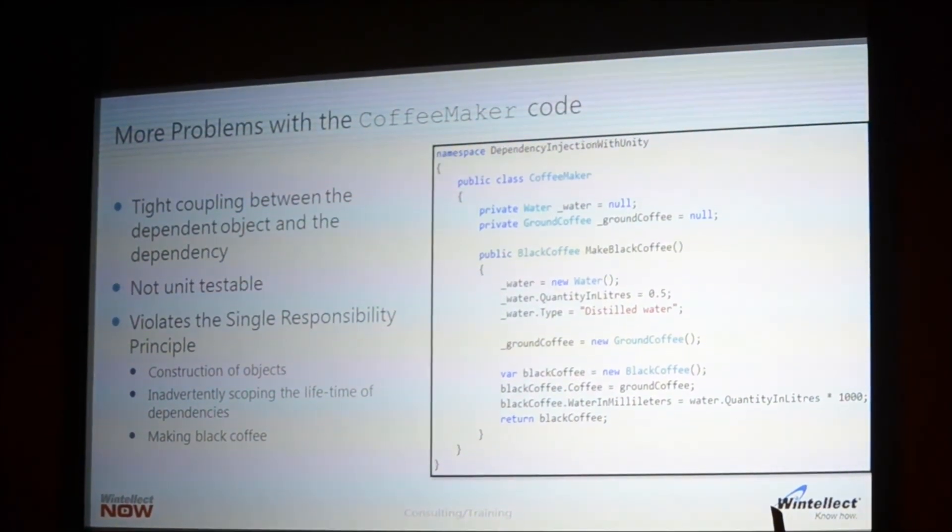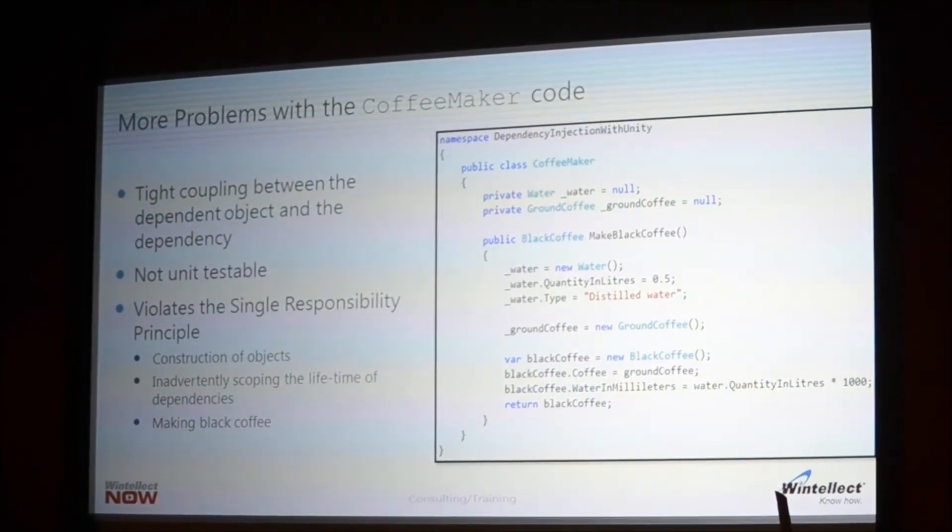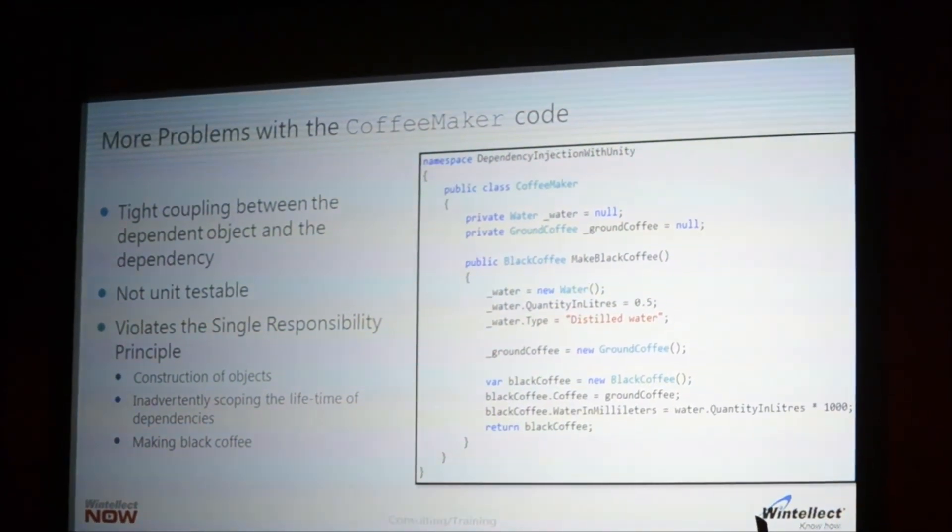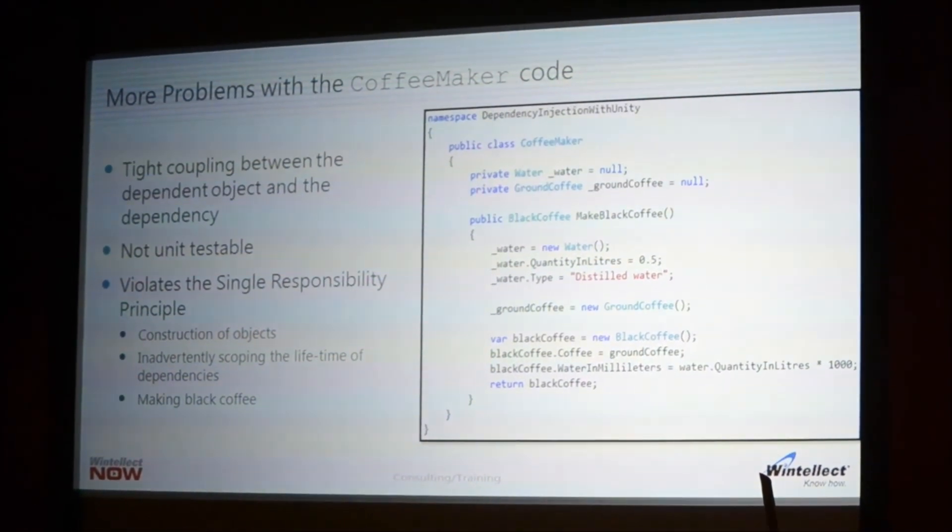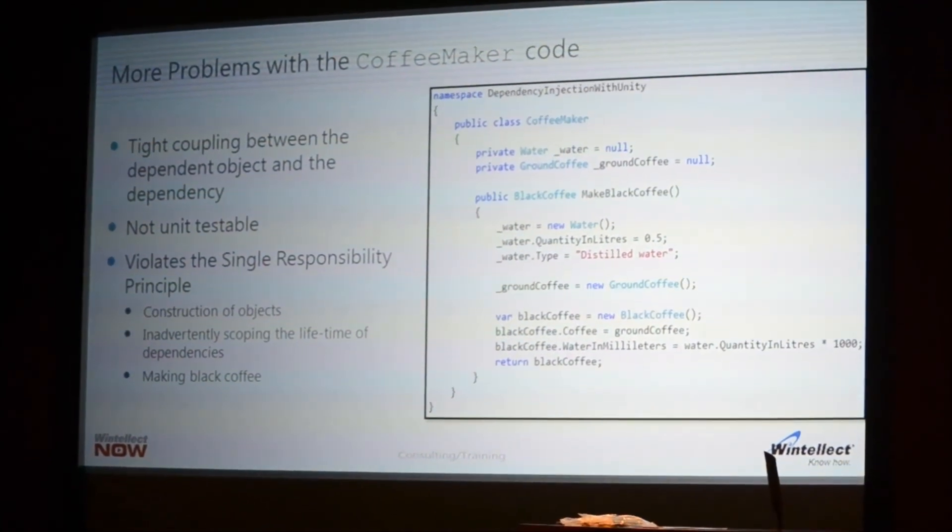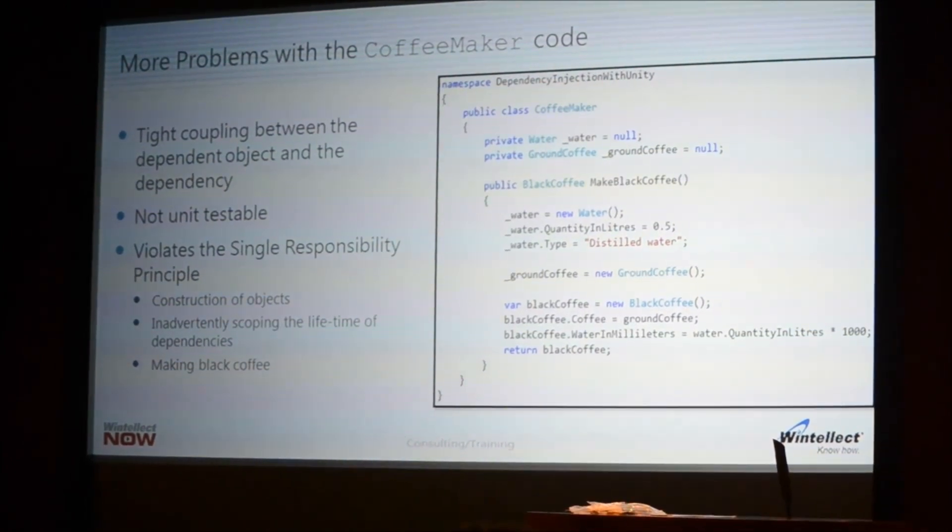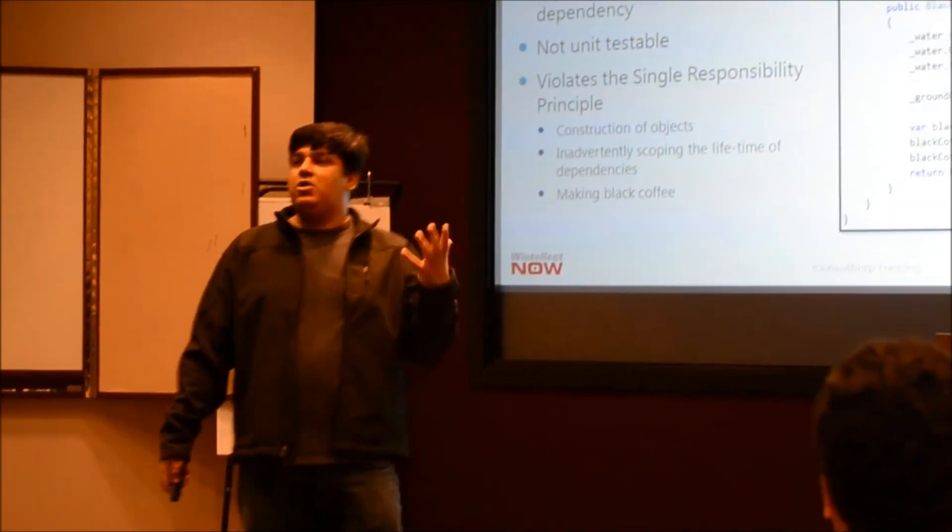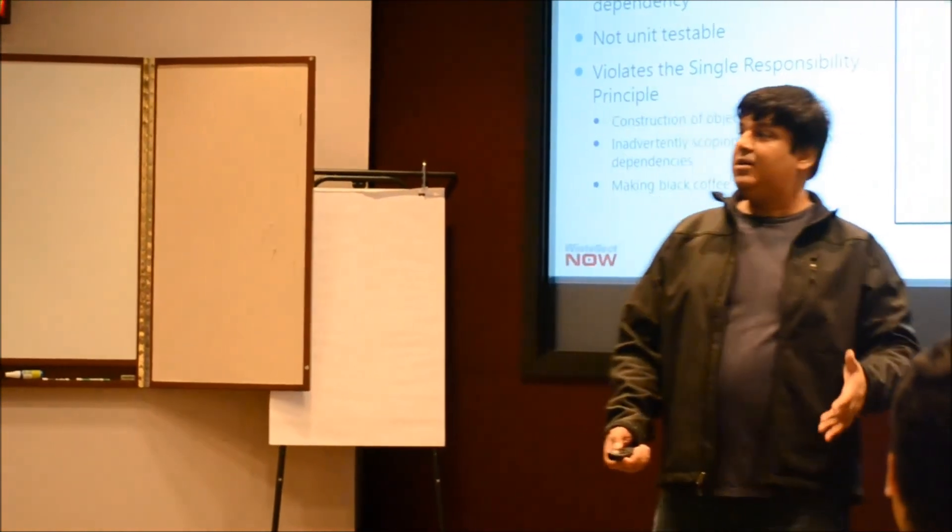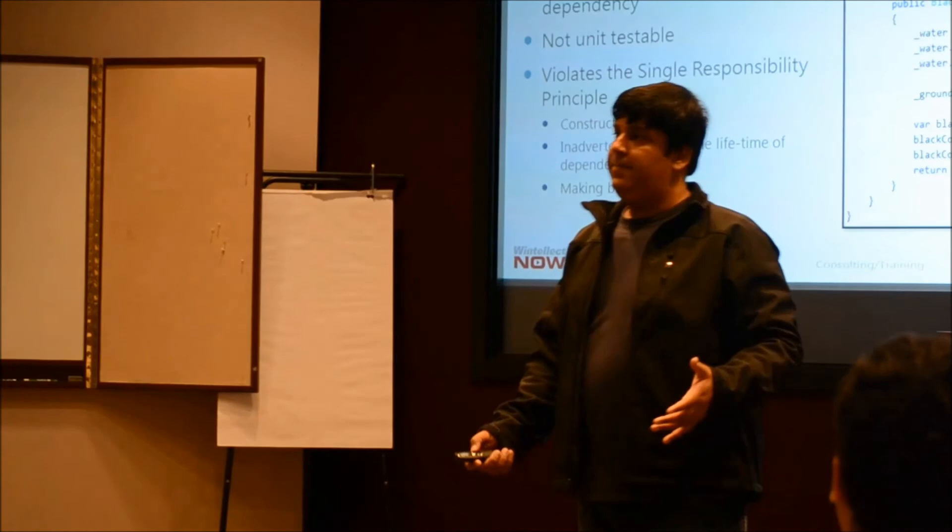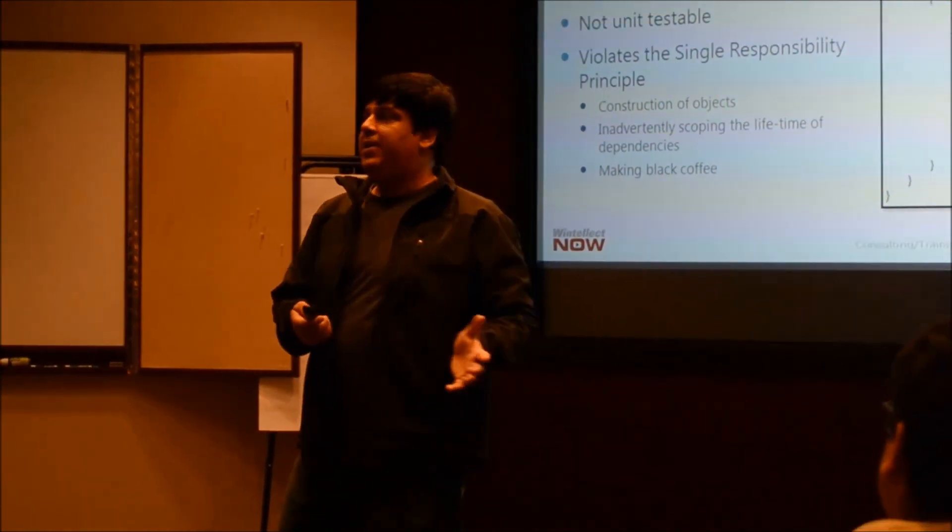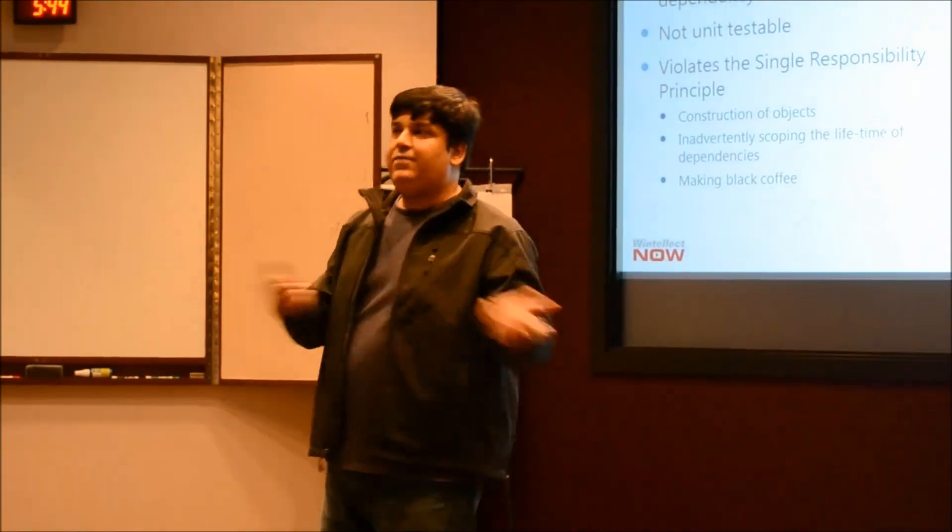Let's look at why it is in violation of the single responsibility principle. What are the responsibilities that this class currently has? One, it is constructing objects. It is new-ing up an instance of the water class and the ground coffee class, which is not the responsibility this coffee maker should have. It is also inadvertently coupling the lifetime of the coffee maker itself with the lifetime of its dependencies. Which means when the garbage collector sees that there is an instance of the coffee maker that is no longer in use, it is going to collect the coffee maker instance and at the same time it is going to collect the water and the coffee powder instances as well. You may want that sometimes. You may not want that. Sometimes you want your dependencies to outlive the dependent object. Maybe there are shared dependencies that you want to pass around different coffee makers.